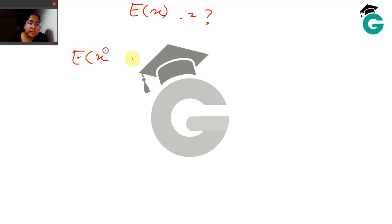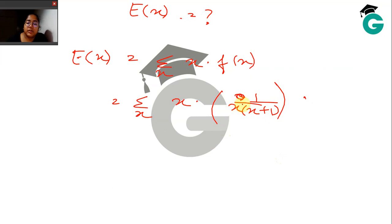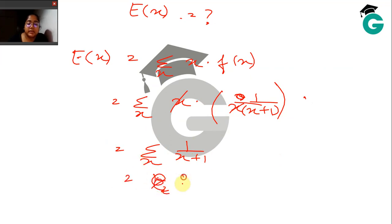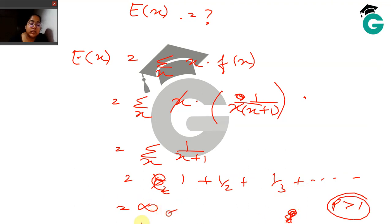The expectation of X is the summation over all x of x · f(x), which equals summation of x · 1/(x(x+1)). Cancelling x, this becomes summation of 1/(x+1), which equals 1/2 + 1/3 + ... and so on. This is a p-series with p = 1, so it diverges to infinity. That is how you calculate the expectation in this case.